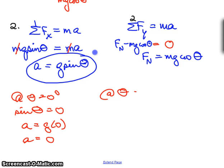At theta equals 90 degrees, okay, so the ramp is perfectly vertical. What's the sine of 90 degrees? Sine of 90 equals one. Therefore, a equals g times one, or a equals g.